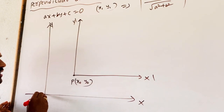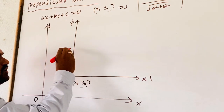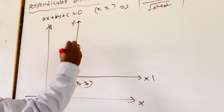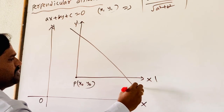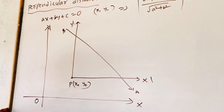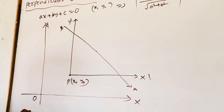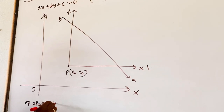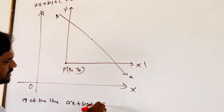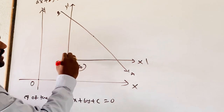We are changing the position of the origin and the direction of coordinate axes is not changed. Let us draw a line AB. The equation of the line in standard form is AX plus BY plus C equals 0, which is in terms of X and Y.